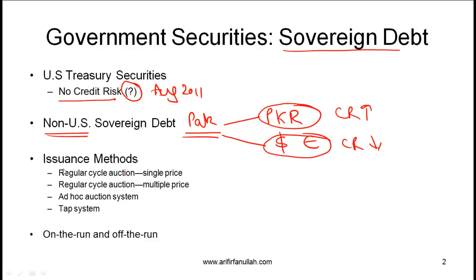Another general point is how governments issue securities. From the CFA perspective, you need to know that broadly speaking there are four issuance methods. The first is a regular cycle auction with a single price. This means that the government, through the central bank, issues government securities on a regular cycle — say every month — and single price means there is a single price at which the bonds are sold.